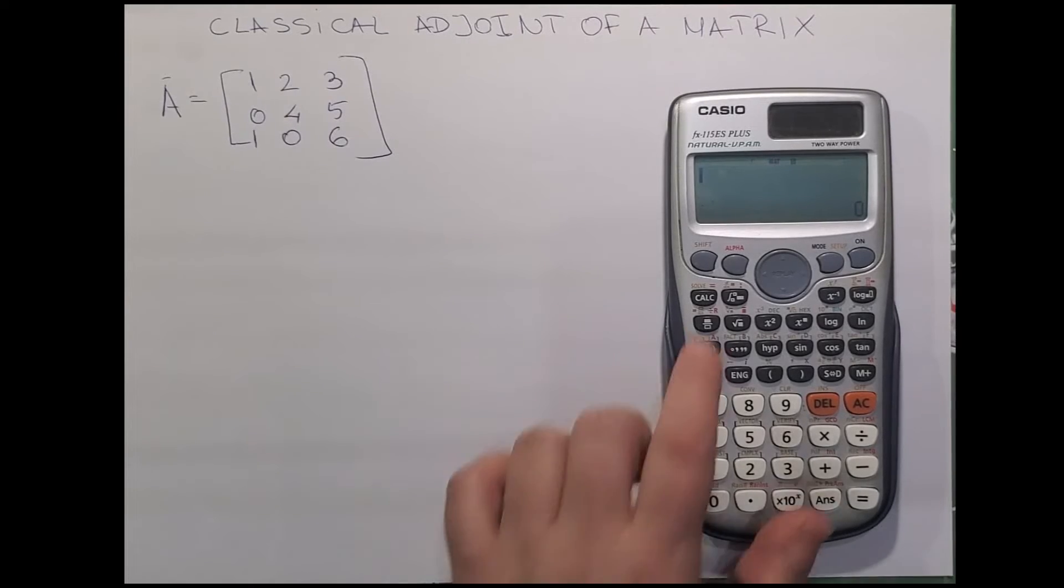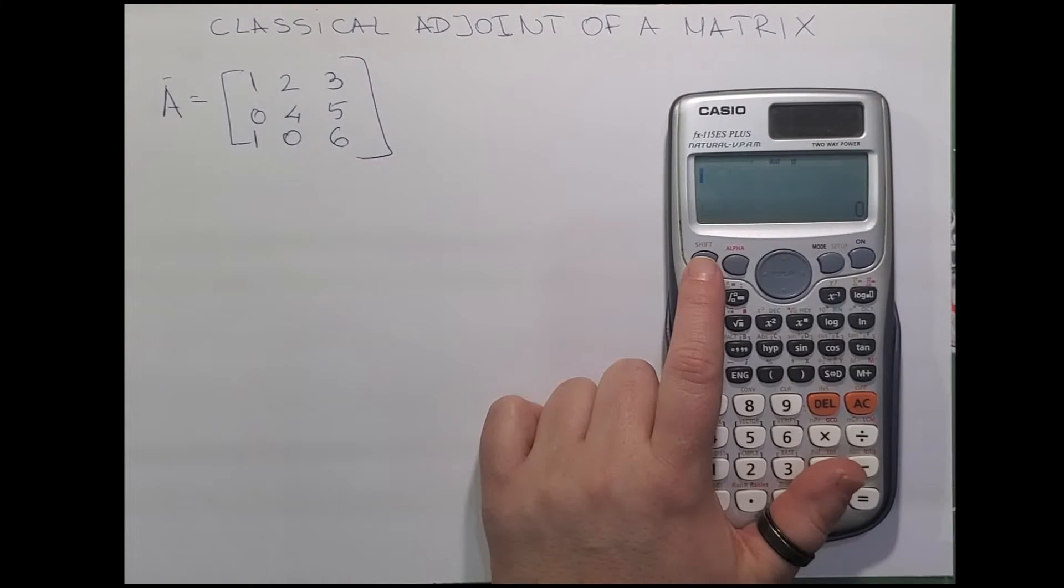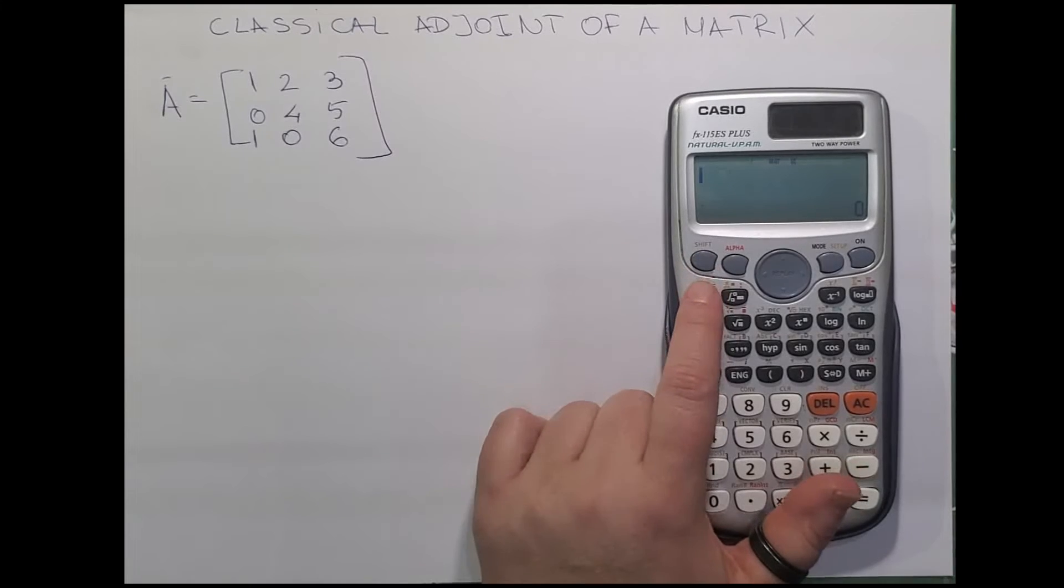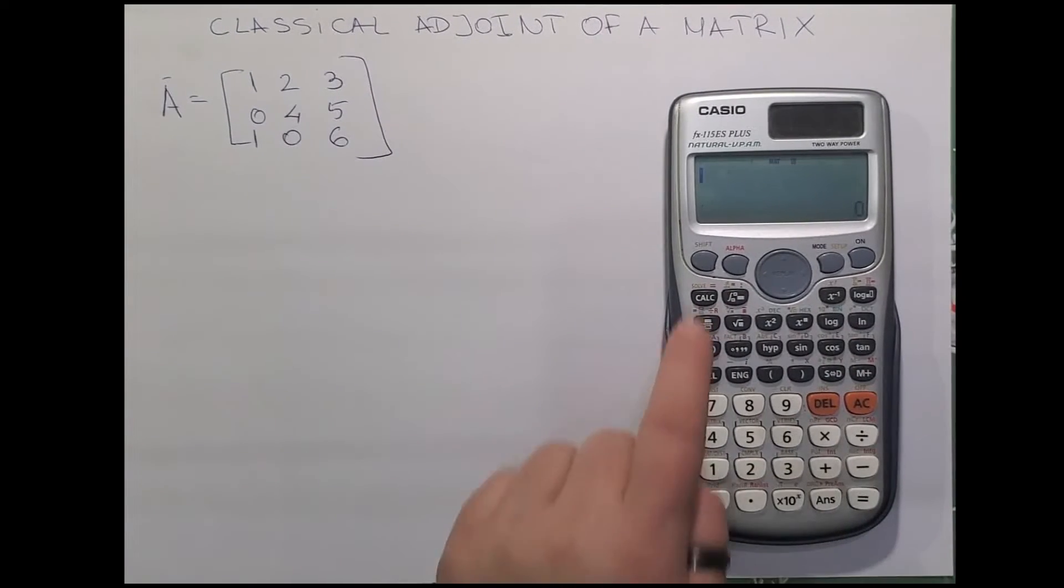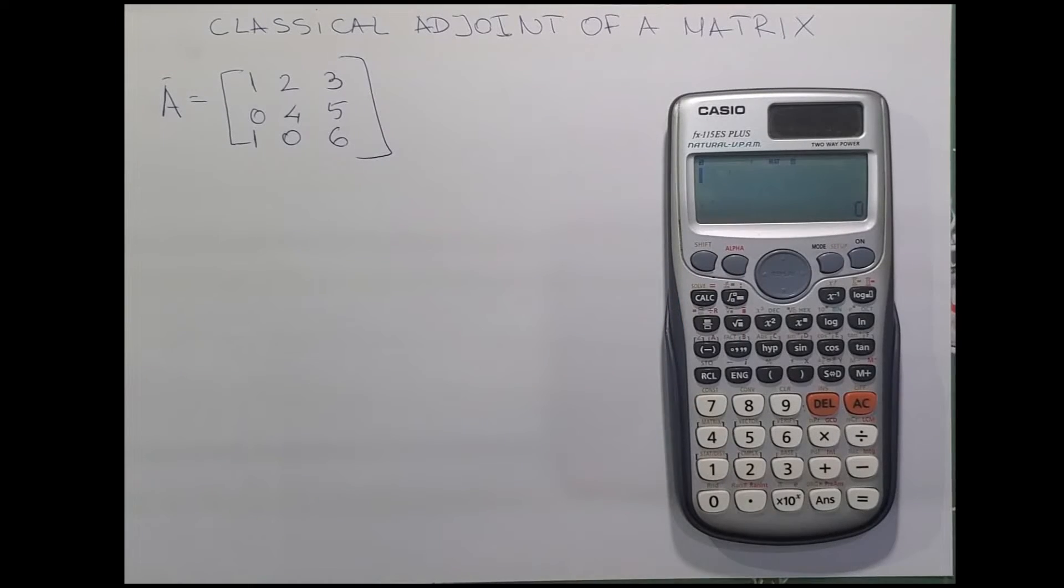If you're not aware of the SHIFT button on the calculator, it is used to access each of the yellow options above each key. So I'm pressing SHIFT first to access the matrix, and now I will press 4.